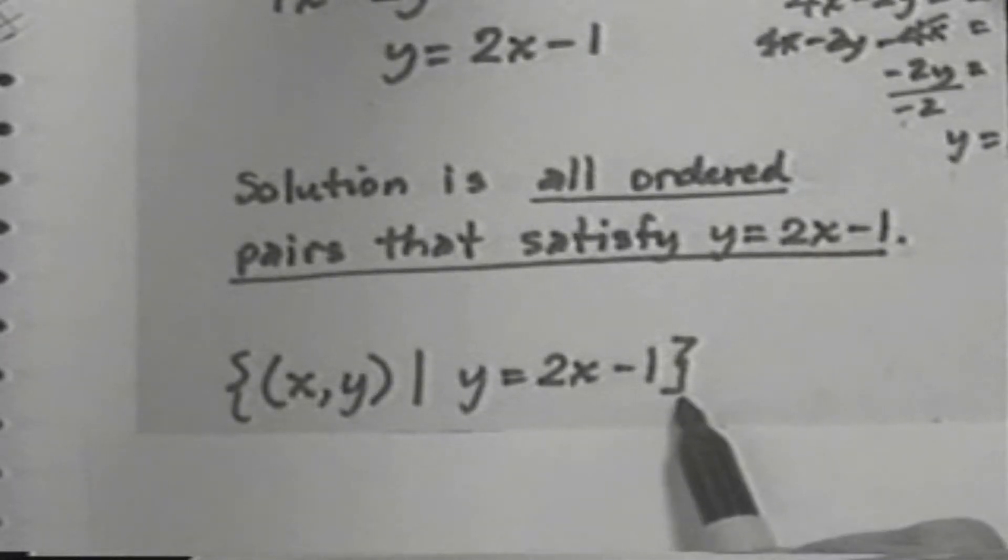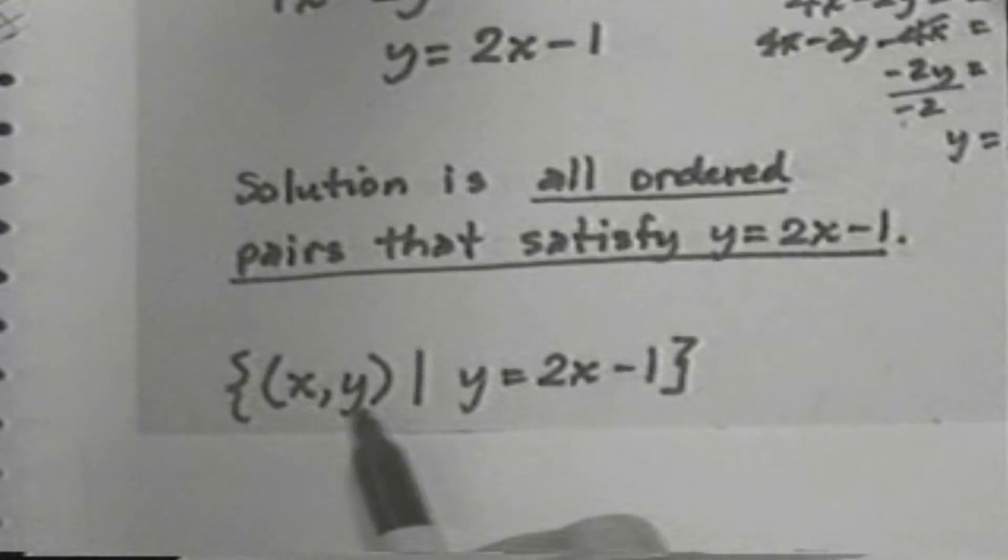The braces around an expression mean mathematically a set. And so, we read this as the set of the x, y ordered pair indicates that every answer is of the form the ordered pair x, y, and so the set of all ordered pairs x, y, the vertical bar is read such that, such that.